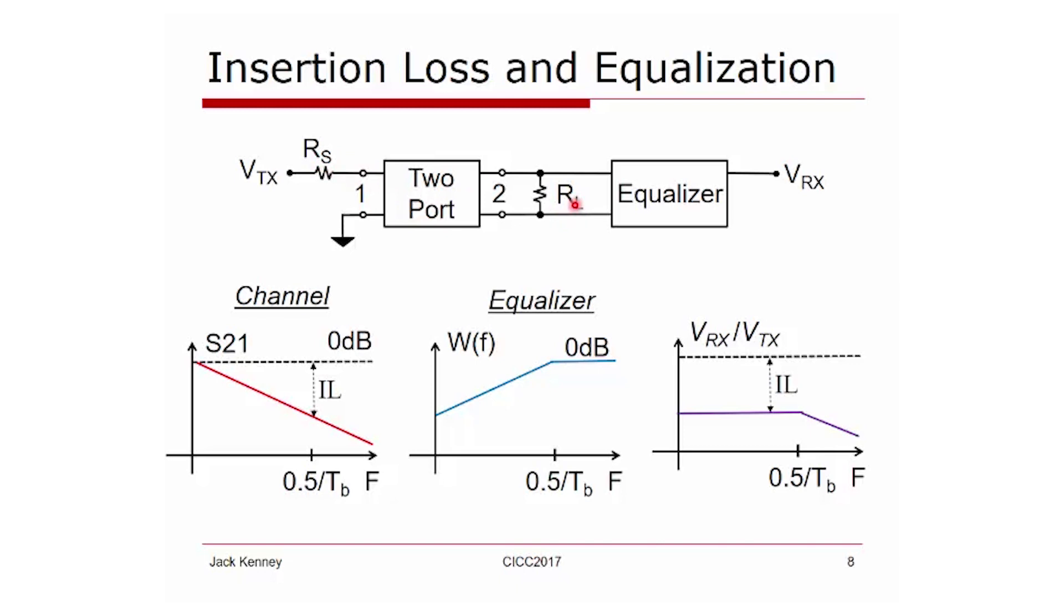The channel has a source impedance RS and a load impedance RL, which should be equal to each other. In the case of wireline lengths, these are single-ended, they're 50 ohms. Differentially, they're 100 ohms.